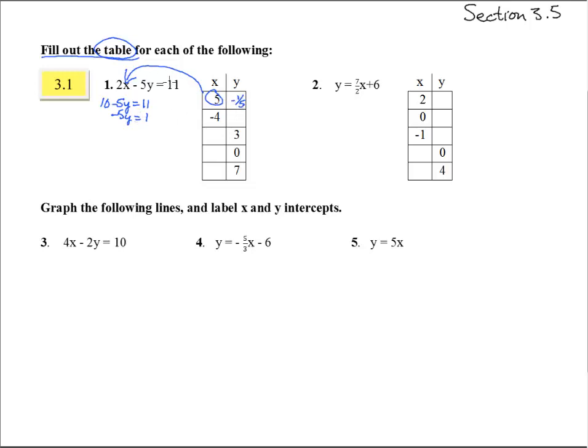So those two are partners which will make it come out to be 11. Next one, now we're going to do this negative 4 here. So 2 times negative 4 is negative 8 minus 5y equals 11.